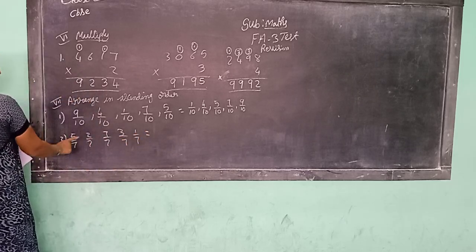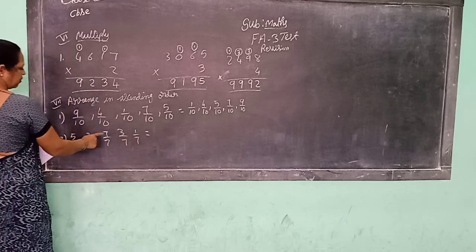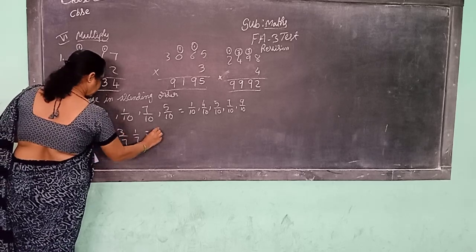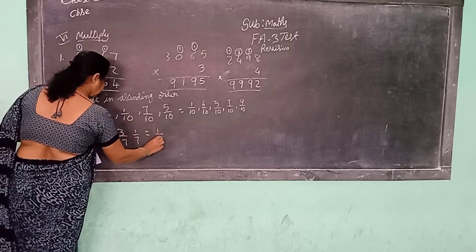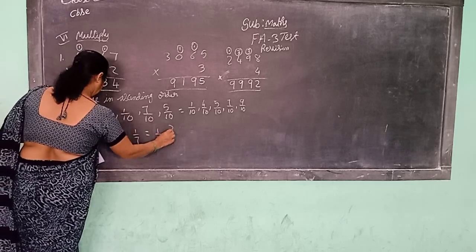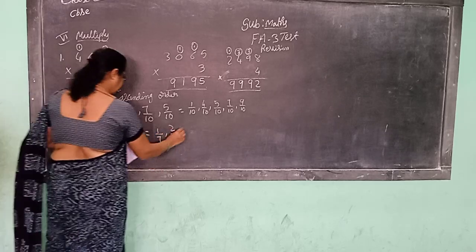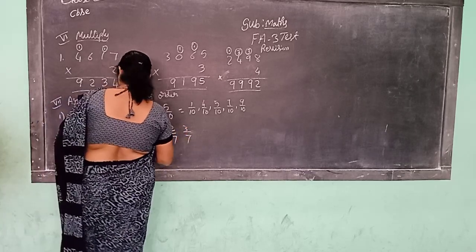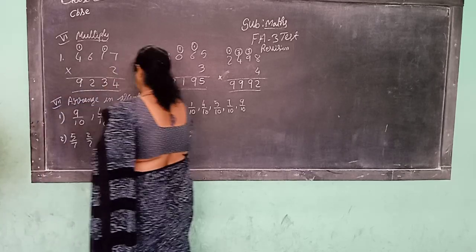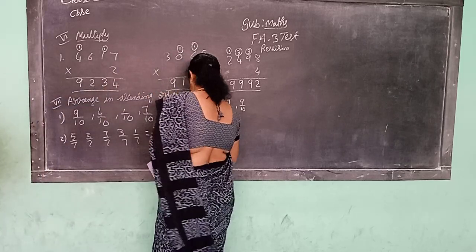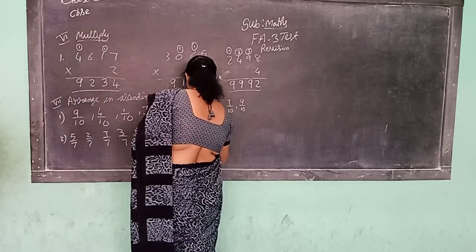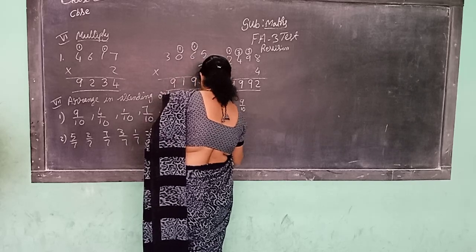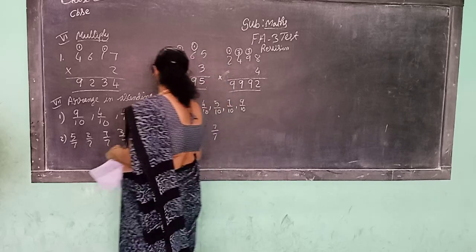So here the numerators are 5, 2, 7, 3, 1. So in ascending order: first 1 by 7, 2 by 7, 3 by 7, 4 by 7 is not there, 5 by 7, 6 is not there, 7 by 7.